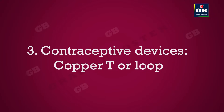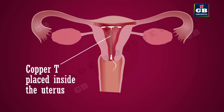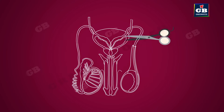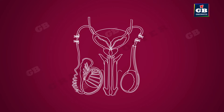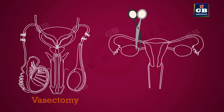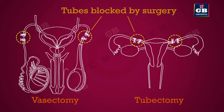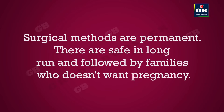Three: contraceptive devices — the copper T or loop is placed in the uterus to prevent pregnancy, but can cause irritation and various side effects. Four: surgical methods of contraception — vasectomy, where the vas deferens in the male is blocked by a small surgery to prevent sperm transfer; and tubectomy, where the fallopian tube in the female is blocked by surgery so the egg cannot reach the uterus. Surgical methods are permanent and safe in the long run.